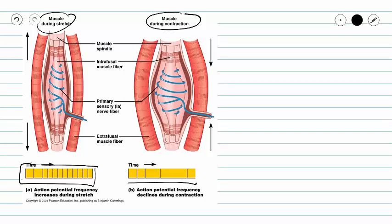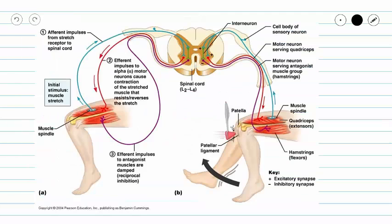When that stretching occurs unexpectedly — without your brain taking over — you initiate the stretch reflex by causing contraction. This seems like a simple act, and it is. The muscle spindle receives information, carries it into the spinal cord, and signals go straight to the motor neuron, which causes contraction of that muscle.